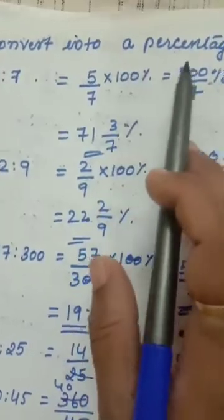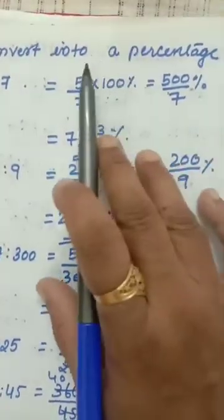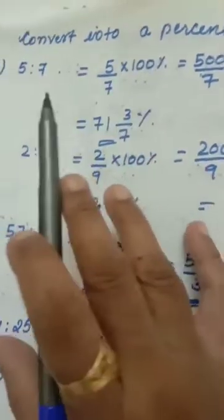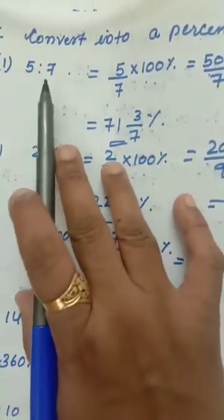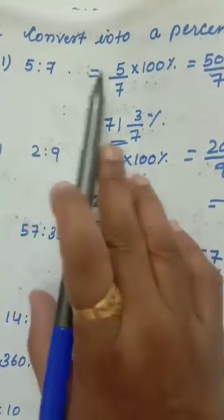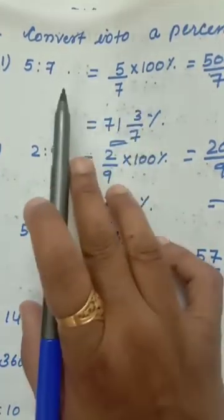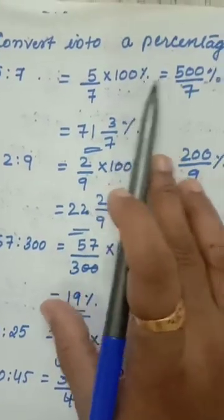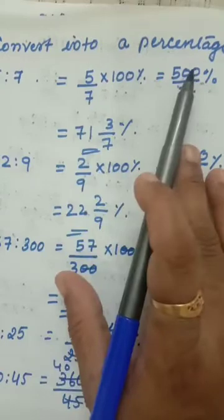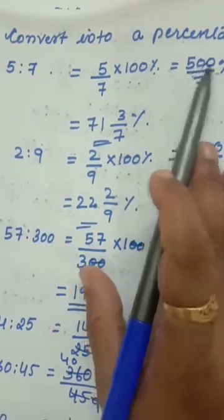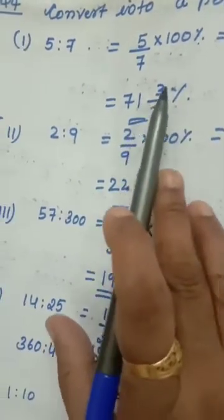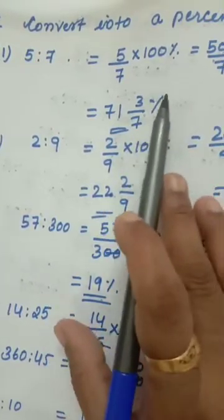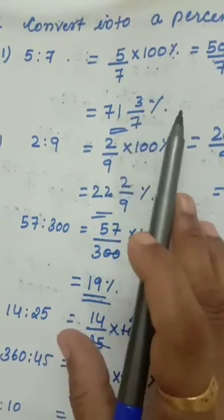Question number 4: convert into percentage. To convert into percentage, multiply by 100 percentage. Number is 5 ratio 7 — ratio means divide only. So 5 divided by 7 multiplied by 100 percentage. You cannot cut out, so multiply and write: 500 divided by 7. You get 71 and 3 by 7 percentage. Do not forget to put the percentage sign, otherwise the problem is wrong.